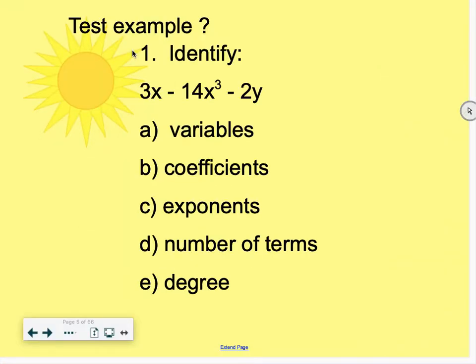All right, so the answers to these test example questions for target one. The variables in number one are the letters in this expression. So x is a variable, and y is a variable. x cubed is not itself a variable. The variables are just the letters.